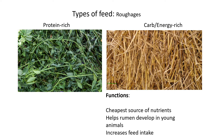The second type is roughages, which is usually the feed found out in the field. There are also two types: protein-rich and energy-rich. As the name implies, protein-rich has more protein and energy-rich has more carbohydrates. The main function of roughages is that it's the cheapest source of nutrients — the farmer generally doesn't have to plant any extra crops.